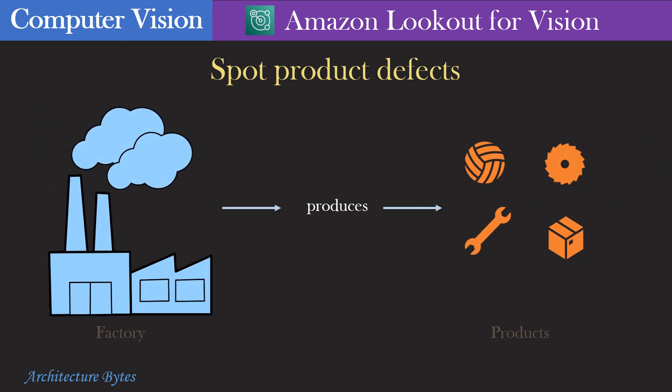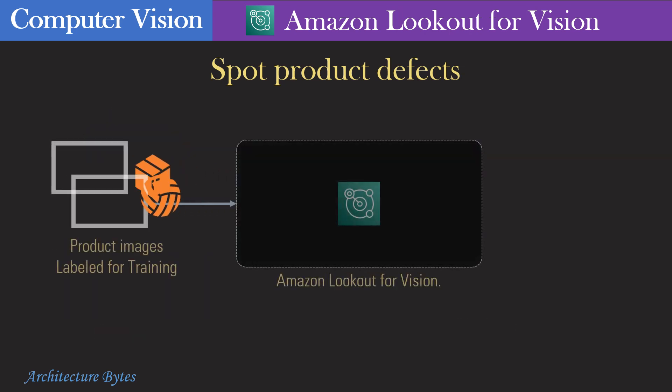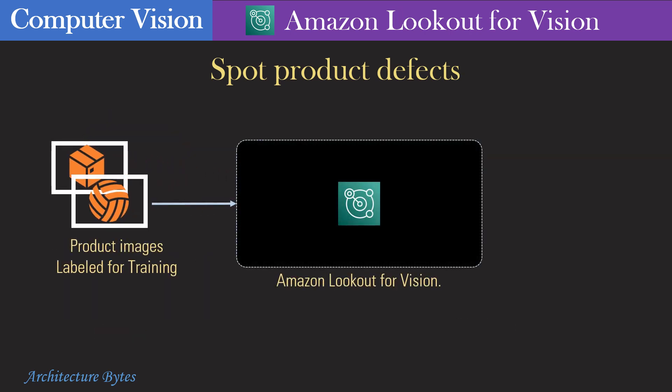Let's look at Amazon Lookout for Vision. A typical factory may produce a large number of products that possibly go through a manual quality check. That may be inefficient with hundreds of thousands of items being produced every day. What if the quality check could be done by an AI service examining pictures of finished products? Amazon Lookout for Vision does exactly that, using computer vision to detect product defects. You start by creating a machine learning model with some existing product images so that it knows the difference between a good quality product and a defective one.